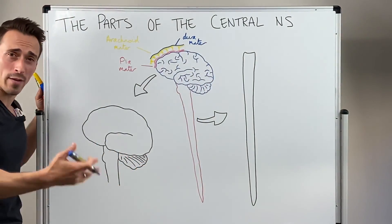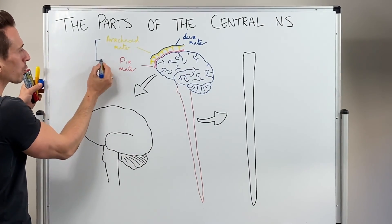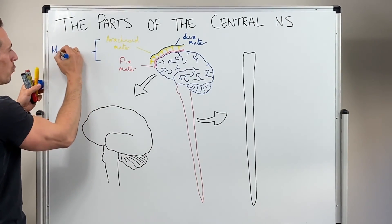On top of the dura mater is where we have our skull. And again, cumulatively, these three layers are called our meninges or meningeal layers.